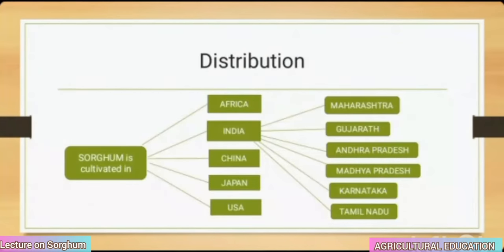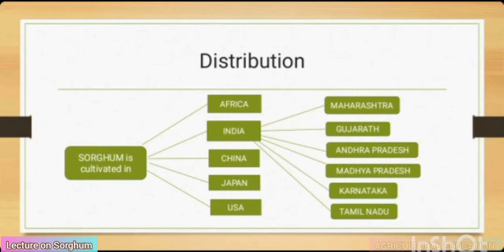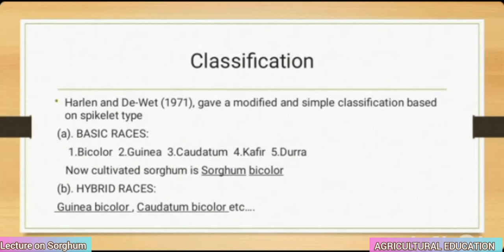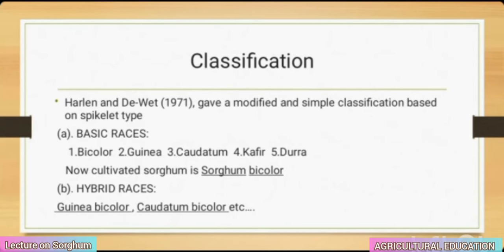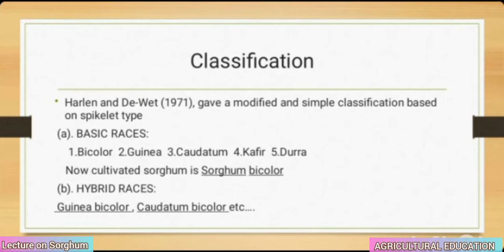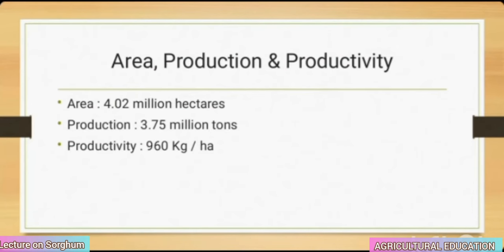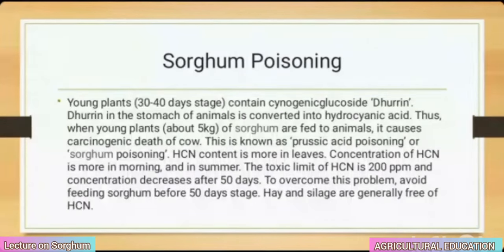Harlan and Dewet gave a modified and simple classification based on spikelet type. Basic races: bicolor, guinea, caudatum, kafir, durra. Cultivated sorghum is Sorghum bicolor. Hybrid races: guinea-bicolor, caudatum-bicolor, etc. Area: 4.02 million hectares. Production: 3.75 million tons. Productivity: 960 kg per hectare.